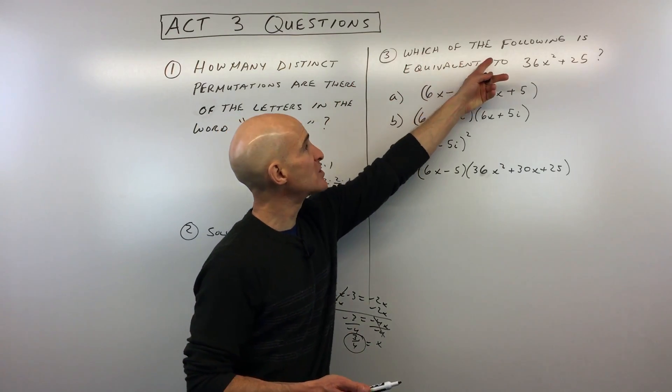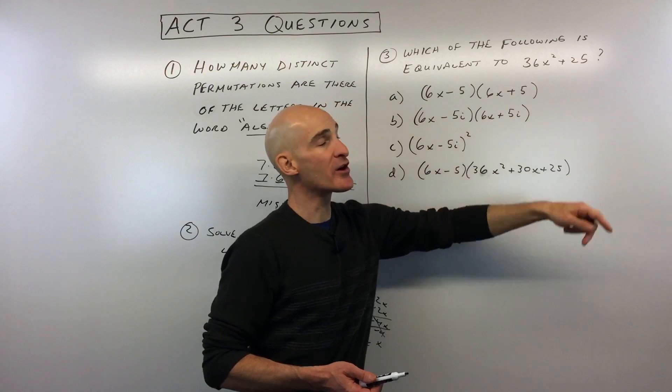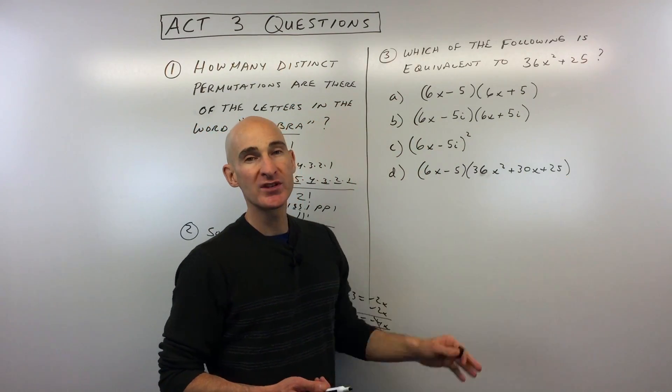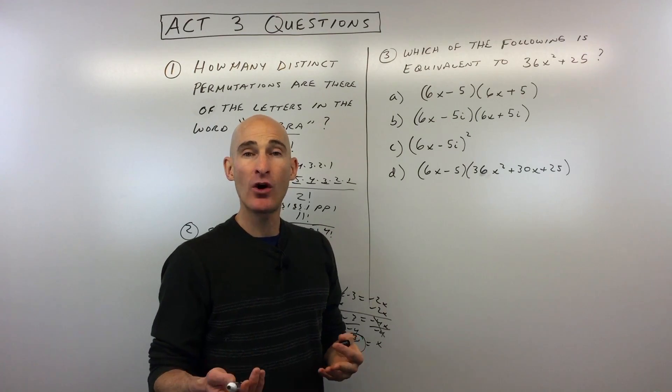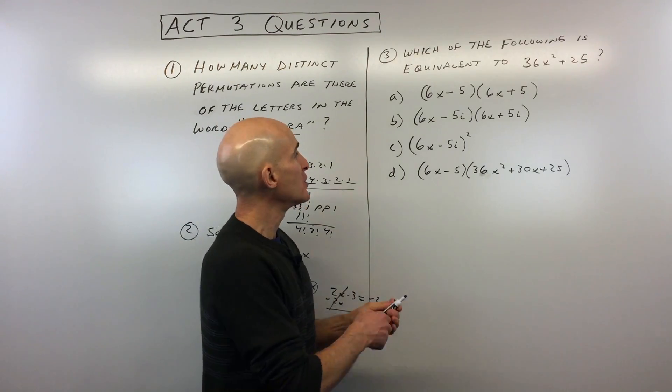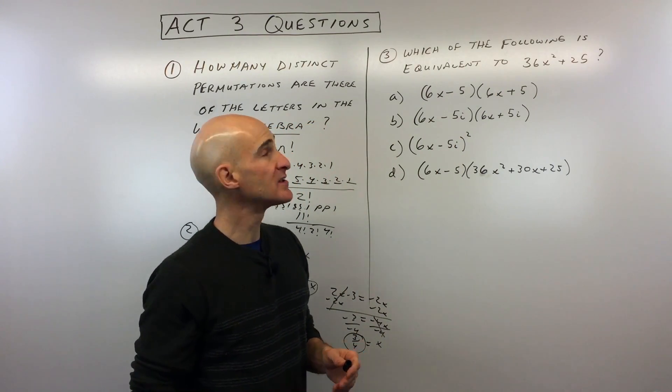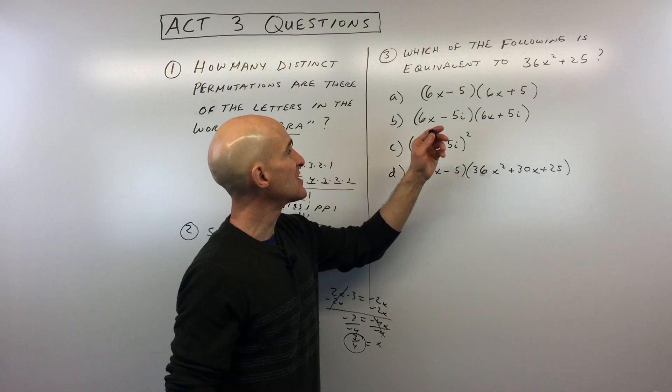Let's get into the last example. Number three, it says, which of the following is equivalent to 36 X squared plus 25? So you can see I've written down a few multiple choice answers. And again, your option is always to work backwards. You could multiply these together and see which one of these works. So maybe we'll go ahead and take a look at some of these just to see how that would be.